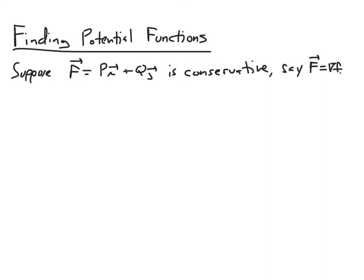So if I have this conservative vector field, I know that it is the gradient vector for some function lowercase f — the potential function. In this scenario, we know that P, the first component of capital F, is equal to del f / del x, the partial derivative of f with respect to x. And we know that Q is going to be del f / del y, since these are the second components of F and the gradient of lowercase f, respectively.